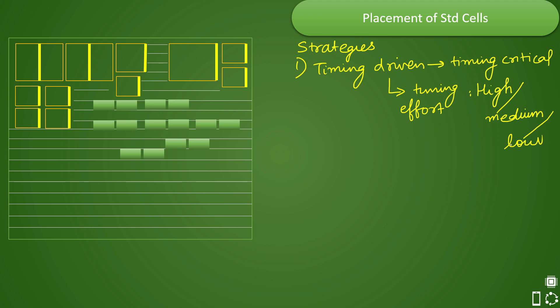If you put timing effort as low, then the tool will not give priority to the timing. But if your design is timing critical, then you will say that you have to use timing effort high while placing the standard cells.